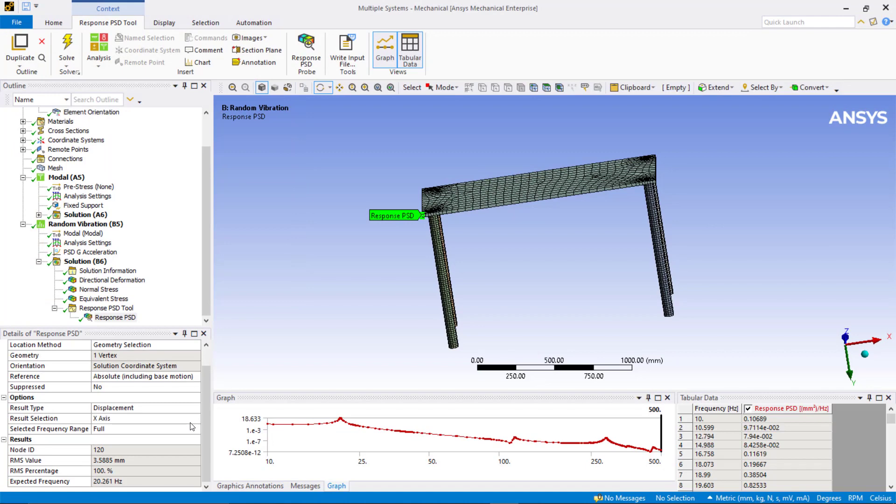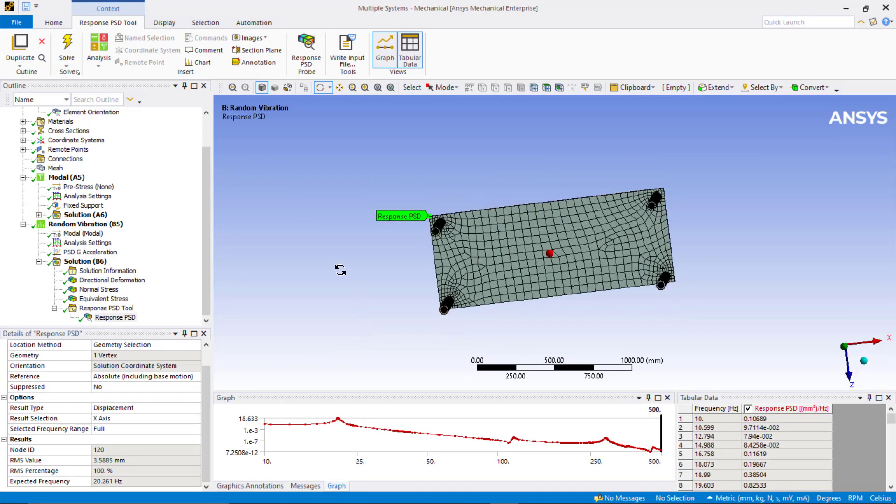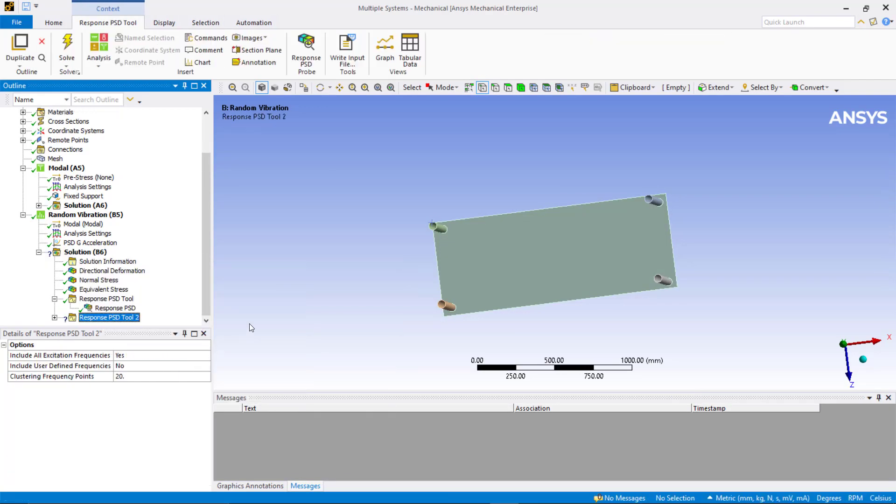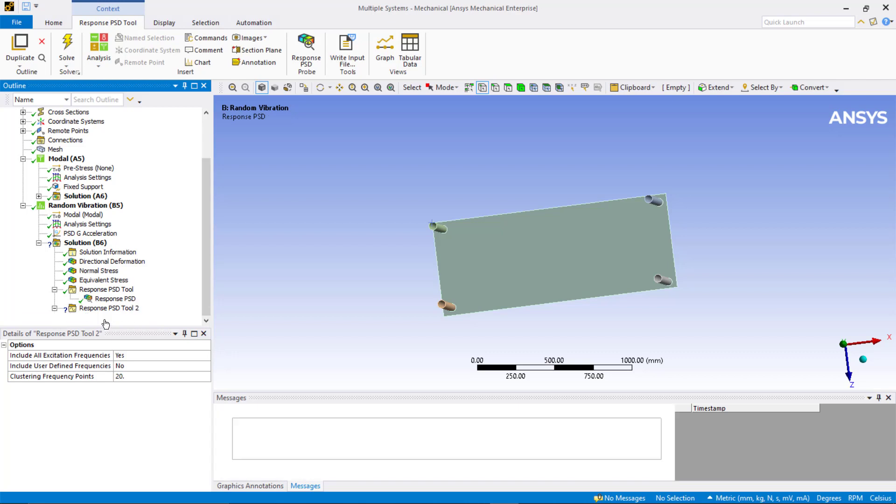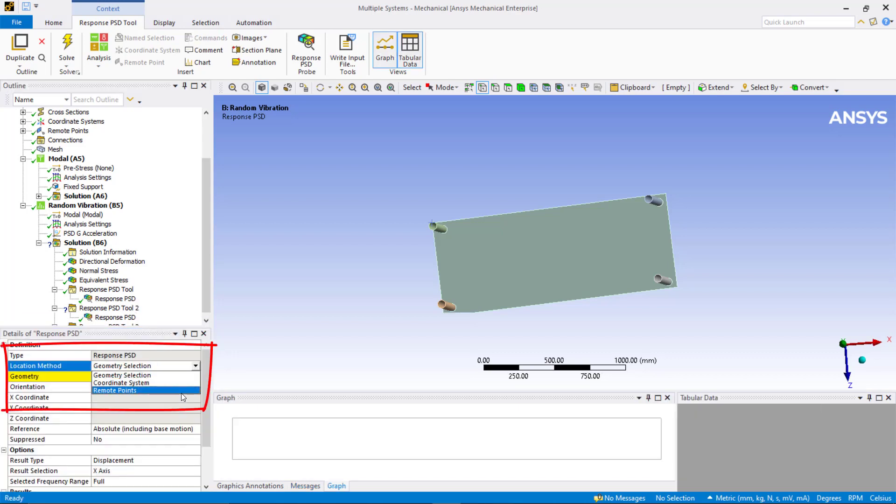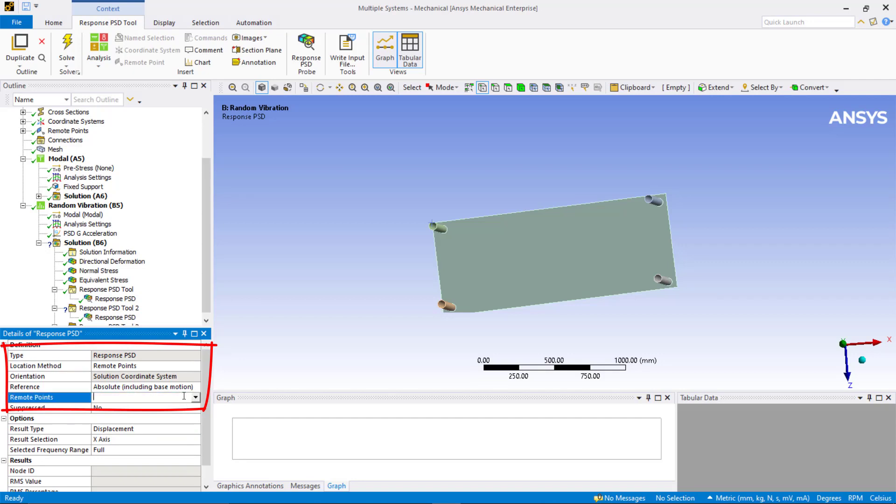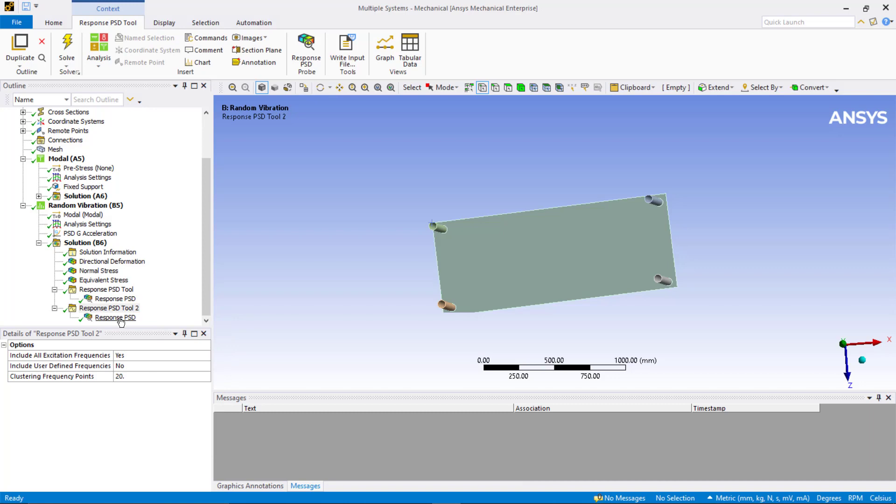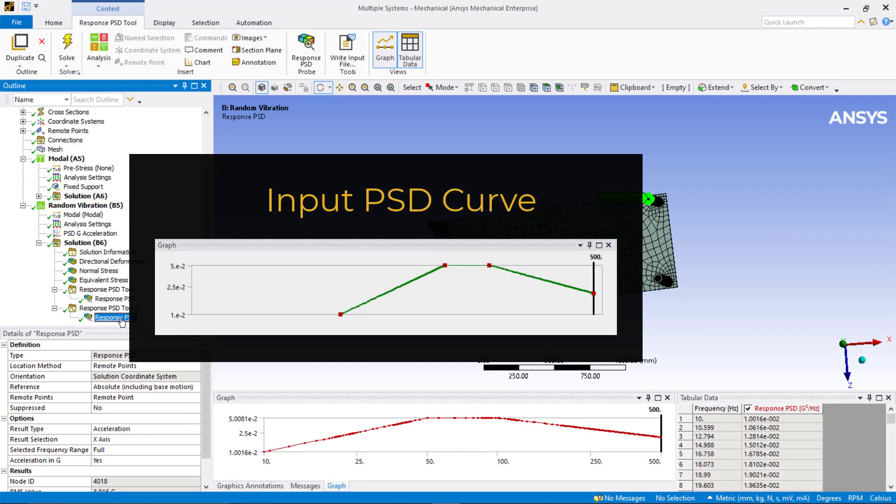In our example, the remote point is predefined using the edge of the bottom of one of the table legs. Under solution of the random vibration, insert another response PSD tool and insert response PSD. Set the location method to remote point and set the reference to absolute. Next, set the result type to acceleration and result selection to x-axis. Set the acceleration in G to yes. Evaluate the result. You can see that the response PSD curve matches with the input PSD curve.